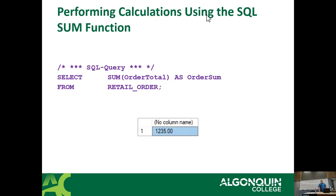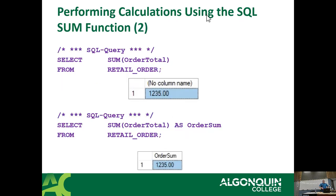An example of an aggregate function: SELECT SUM(order_total) AS order_sum FROM retail_order. In this example, it's adding all the order totals and giving you a single value — unfiltered, ungrouped, it just counts all those values. You can always rename it using an alias, because depending on which database engine you work with, the aggregate function will either return with no column name, or it'll come back with literally the name of the function as the column name.